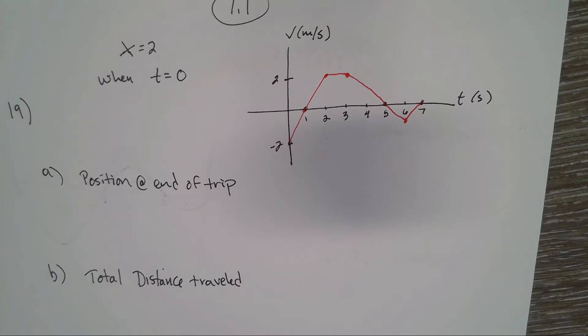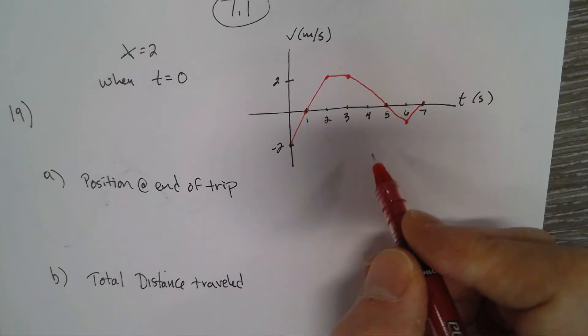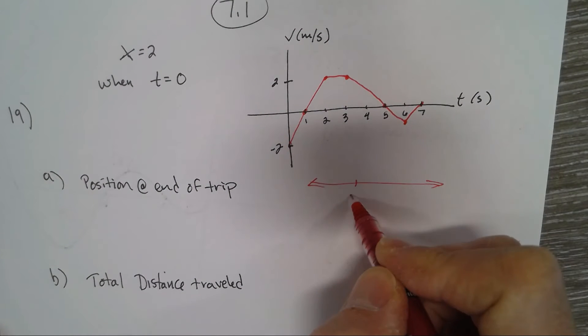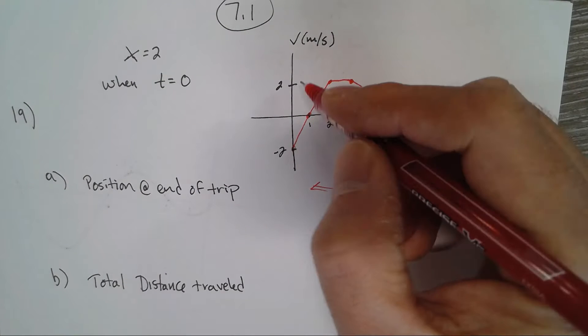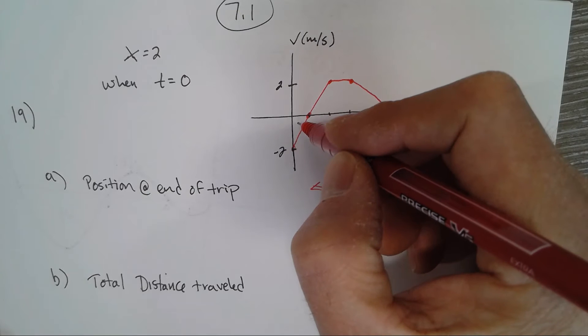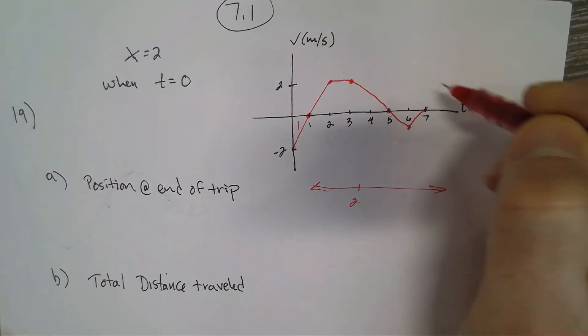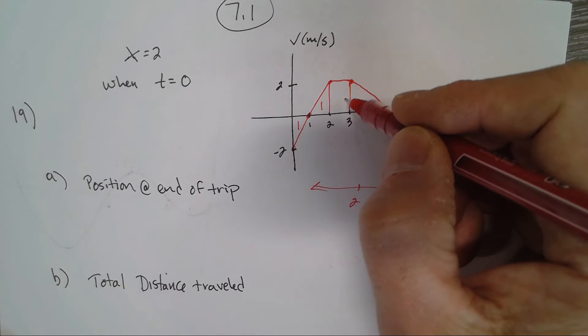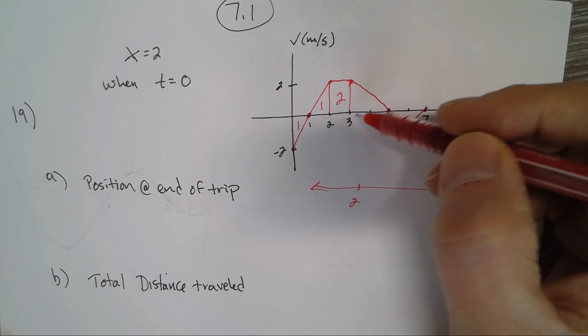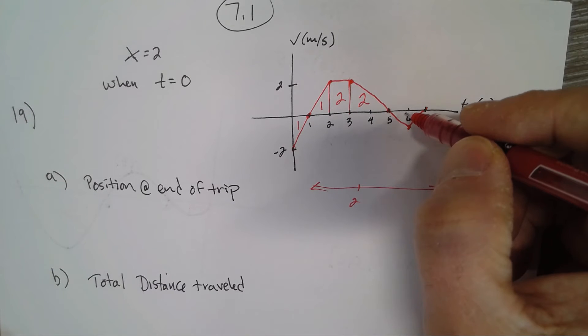The particle starts at 2 on the number line. Let's figure out the individual areas. That's 2 times 1 is 2, divided by 2 is 1. That's negative 1 because it's below the t-axis. 2 times 1 divided by 2 is 1. 2 times 1 is 2. 2 times 2 is 4, divided by 2 is 2. 2 times 1 divided by 2 is 1. So we have the areas.